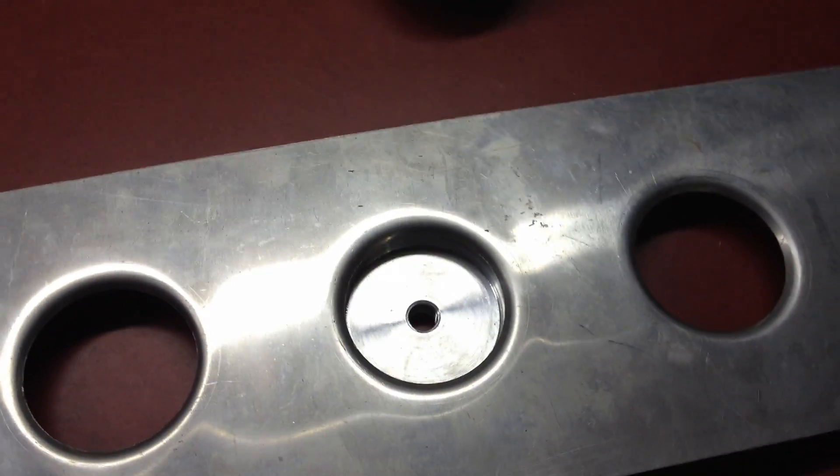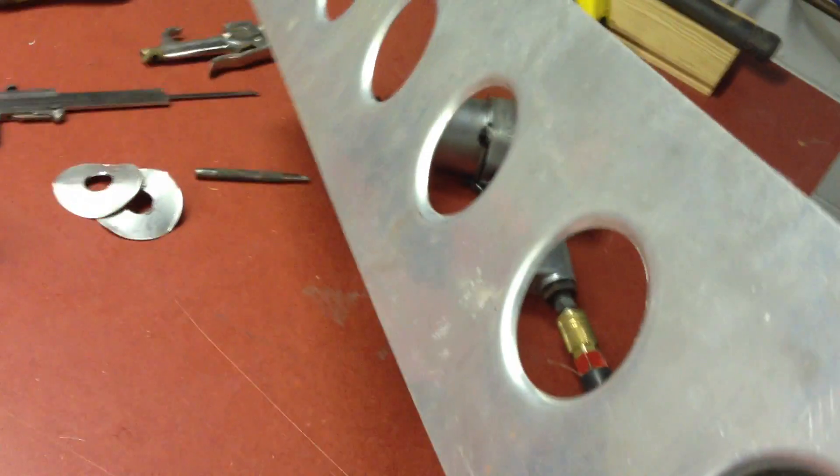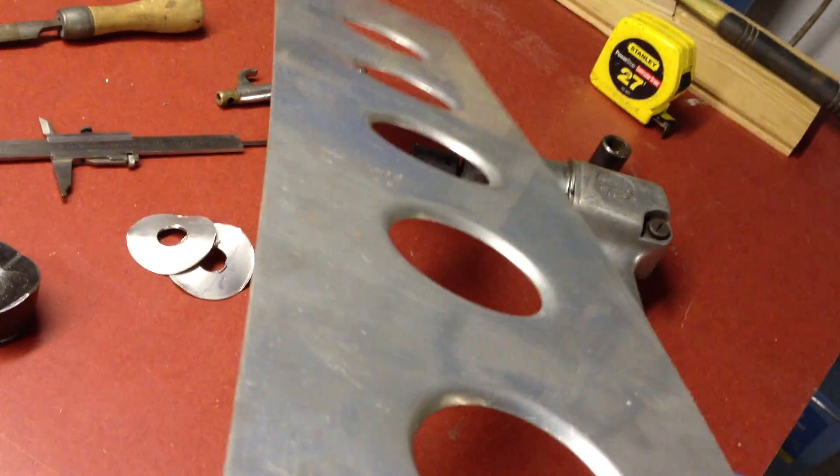So you just want to turn it over, maybe use some blocks of wood, and just carefully tap it. But that's it, there you go. That's putting a nice, beautiful, flared hole in a piece of thin aluminum. That's how it's done.